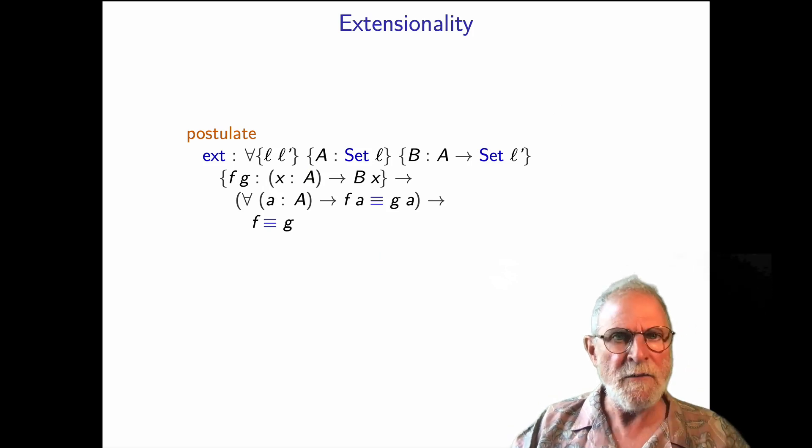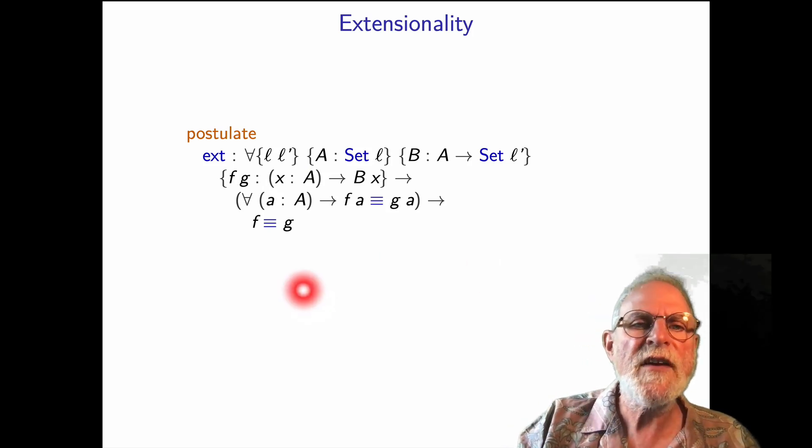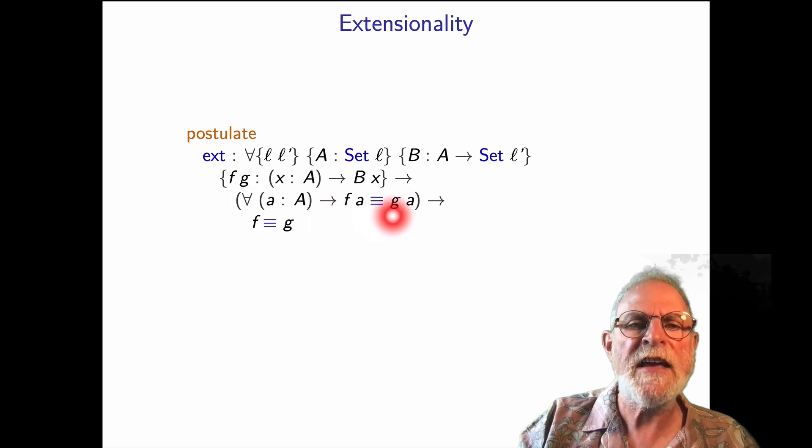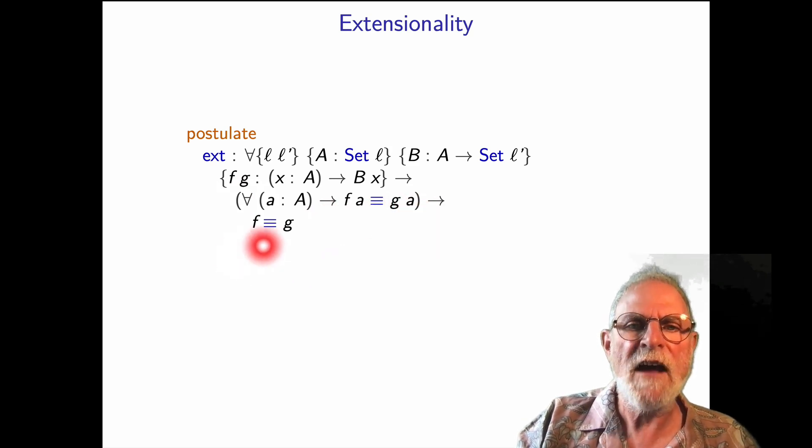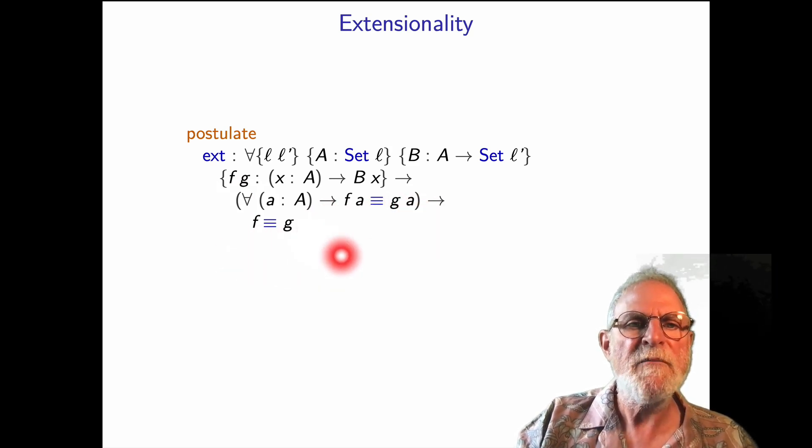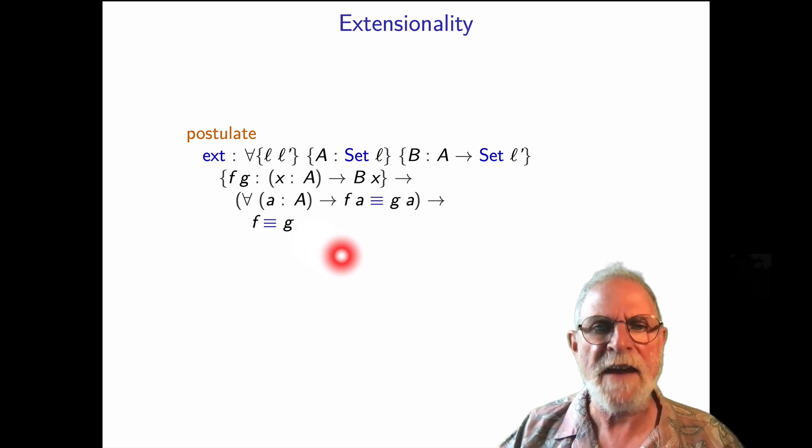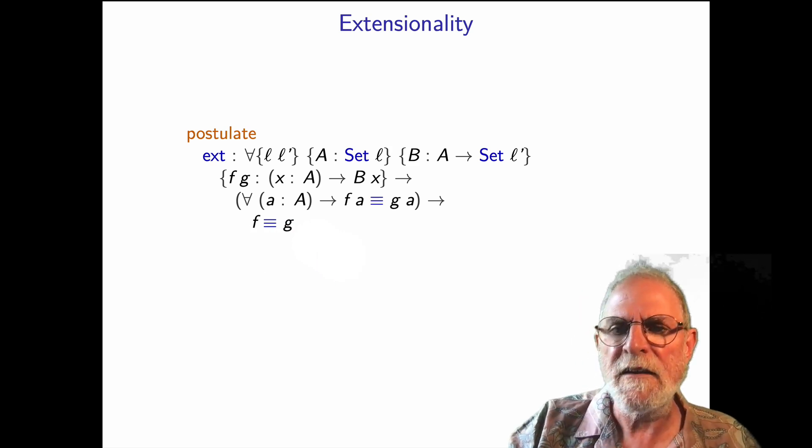We'll need one other thing, which is extensionality, which just says if for all a, f of a is equal to g of a, then the two functions, f and g must be equal. And we'll just postulate that because it's not built in to Agda.